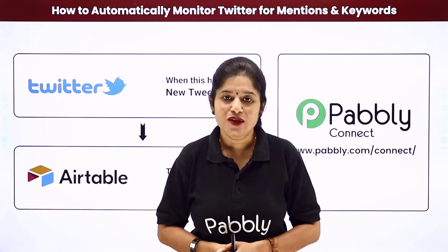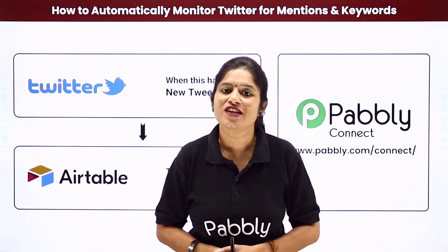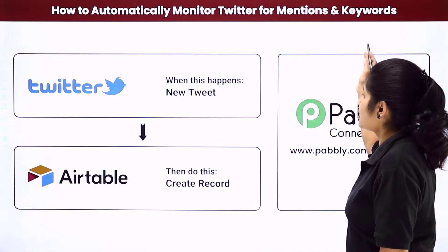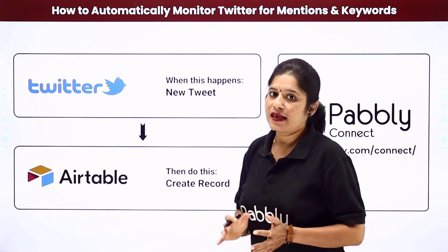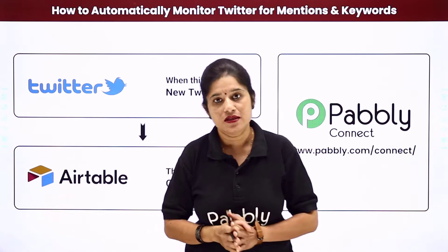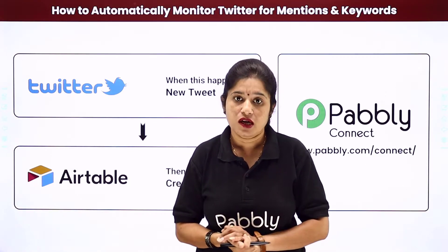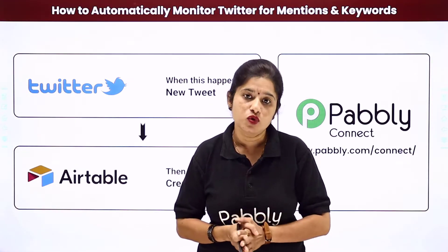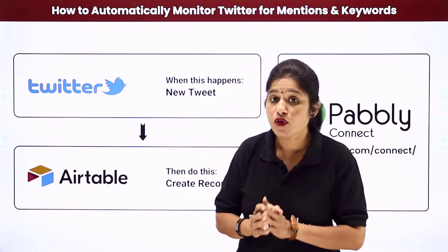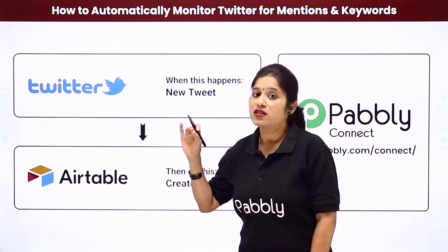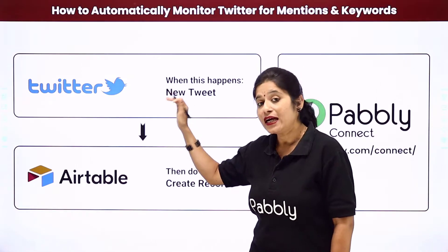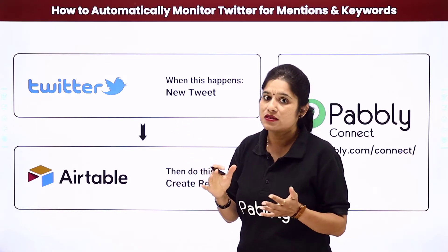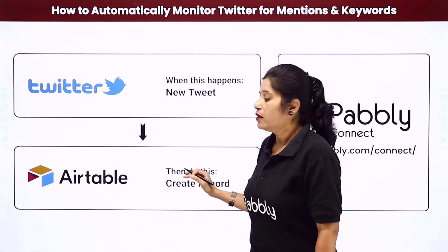Hello everyone, I am your host Ayushikara Setya and welcome back to our channel Pably. In this video we are going to learn how to automatically monitor Twitter for mentions and keywords. Let's take an example: you have created a Twitter account for your business and created some lists where you have added specific users. Your users are creating new tweets on a regular basis, and whenever any of those specific users creates a new tweet containing specific keywords or mentions related to your business, the tweet details should be added to your Airtable base.